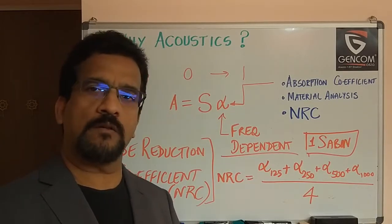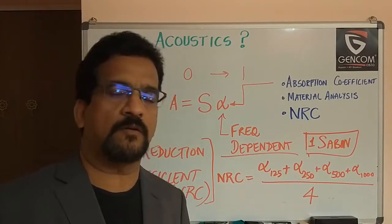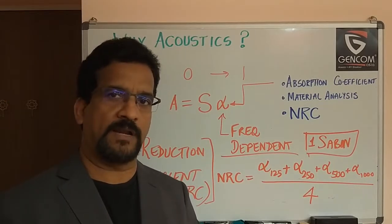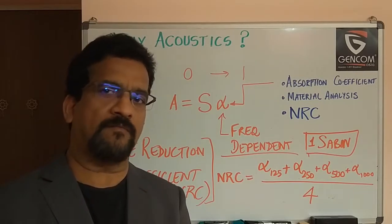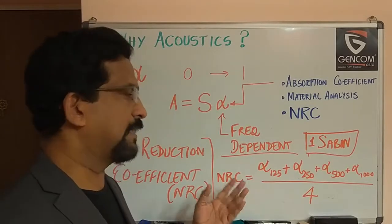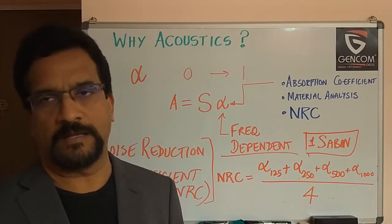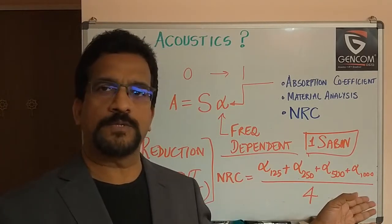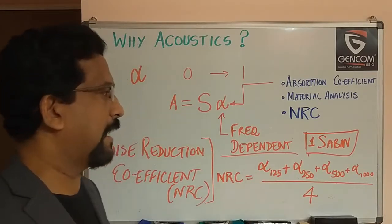In the specification sheet of any acoustic product, you will see an NRC value. If it is close to 0.1 or 0.2, that means it is not a good absorber — it is a good reflector or diffuser. For a sponge-like foam material, the NRC value may be as high as 0.8 or 0.9. The NRC is an industry standard where the four alpha values are computed and divided by four to give a single number.